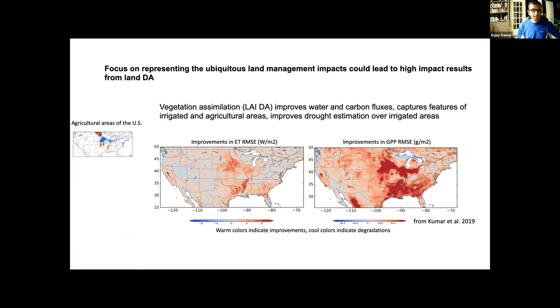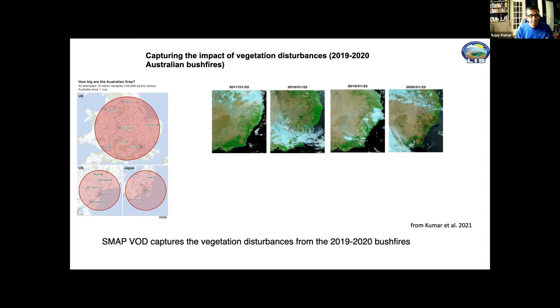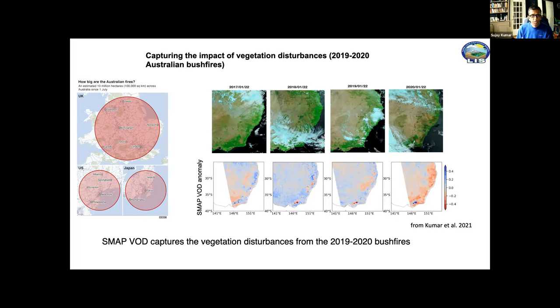Like some of the presentations before, we also found that focusing on land management impacts which are difficult for the land models to represent by itself has given us better results. Vegetation assimilation has shown the ability to capture some of those changes in phenology which the model cannot represent even with good precipitation and things that are happening with vegetation disturbances and so on that are man-made cannot be simulated very well in models.